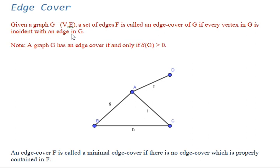Let's try to understand this definition using this example. The objective is to cover all four vertices here: vertex a, vertex b, vertex c, and vertex d. The trivial way to do this is by selecting all four edges, so you can select g, h, i, and f.